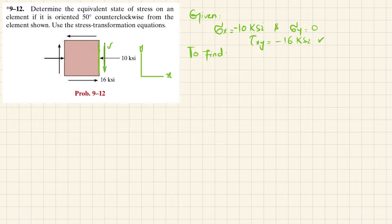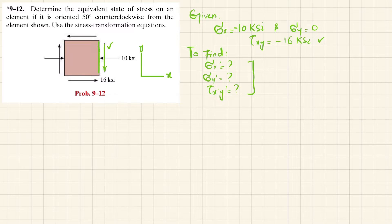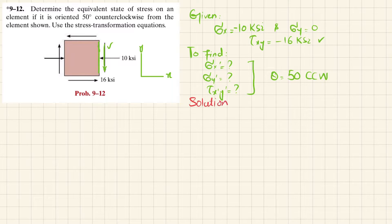What we have to find is Sigma X dash, Sigma Y dash, and Tau of X dash Y dash when this element is rotated 50 degrees counterclockwise. We will start with the solution. Theta is equal to 50 degrees counterclockwise.